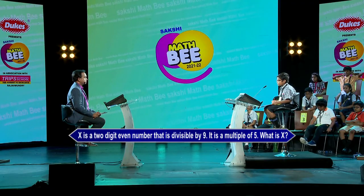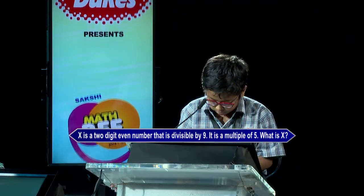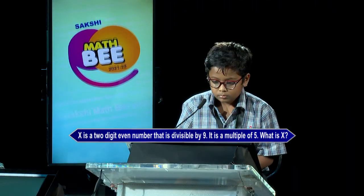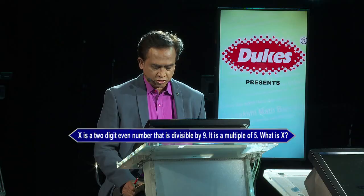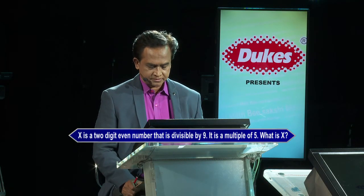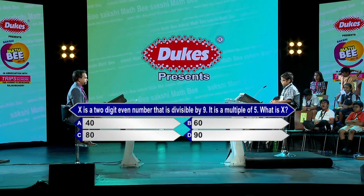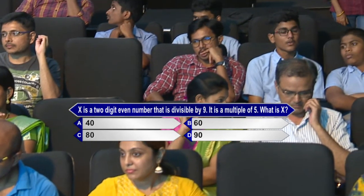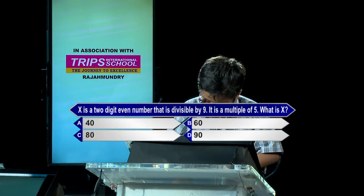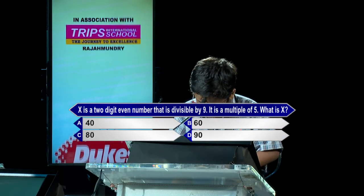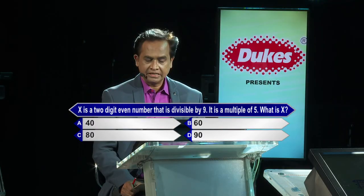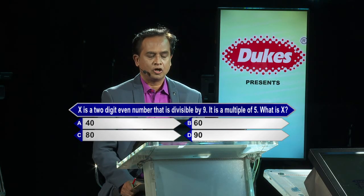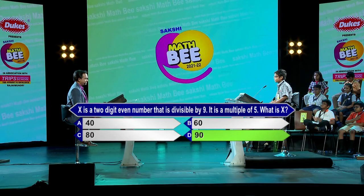X is a two-digit even number that is divisible by nine and is a multiple of five. What is X? Your options: A-40, B-60, C-80, D-90. The contestant answers option D, 90. Kindly lock option D, 90. And 90 is the correct answer.